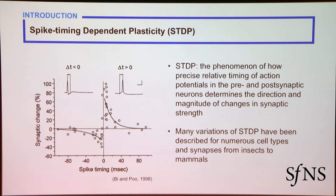In a process called spike timing dependent plasticity, the magnitude and the direction of synaptic modification is determined by the order and the timings between pre- and post-synaptic action potentials. For example, in this classical STDP curve, when the pre-synaptic spike comes before the post-synaptic spike within 40 milliseconds, you see a potentiation. A lot of these STDP experiments were done in single cells, called cultured neurons, using patch clamp.